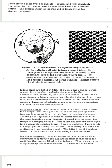There are two basic types of indents: conical and hemispherical. The hemispherical indents have a straight side wall and a circular bottom. The conical indent is tapered and is larger at the top than at the bottom. The indent sizes are listed in 64ths of an inch and come in a wide range. For example, a cylinder designated by the number 22 has indents of 22/64 inch in diameter. There are no other figures or letters used to describe the indents, and there is no way to determine the shape or depth of the indent from the number.